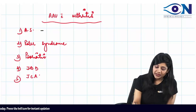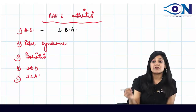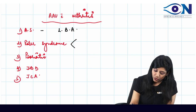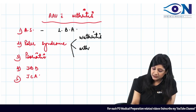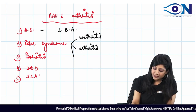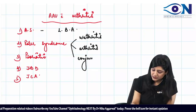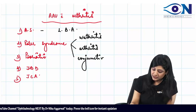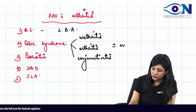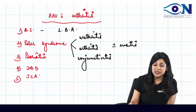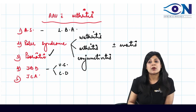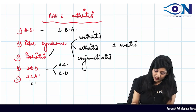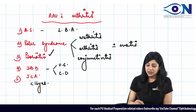If a patient has ankylosing spondylitis, they will present with lower backache. If a patient has Reiter's syndrome, they present with the triad: urethritis, arthritis, and conjunctivitis — this is without uveitis. Then psoriasis, ulcerative colitis, and Crohn's disease fall under inflammatory bowel disease. In juvenile chronic arthritis, the patient will be less than 16 years old.